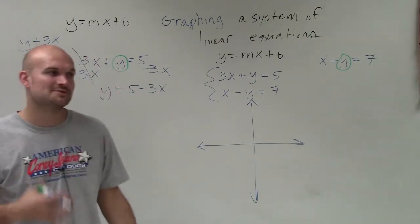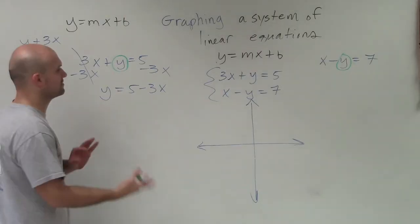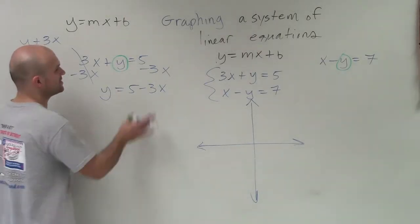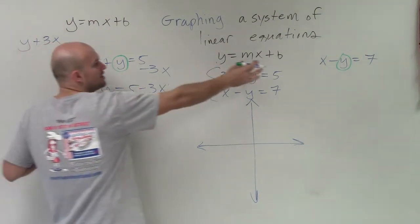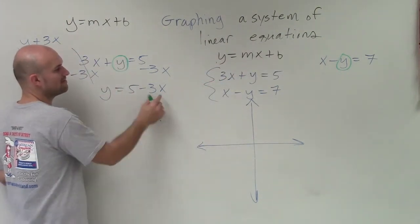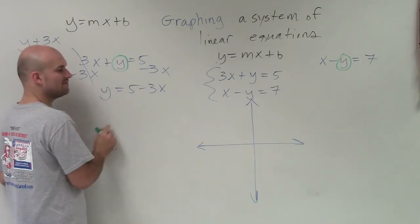Now, this will be the last time I'm probably going to do this without immediately making the correction. However, I want you to see it because a lot of students want to write it as 5 minus 3x. However, we want to convert it back to mx plus b form. Therefore, we want the 3x to be in front of the 5.